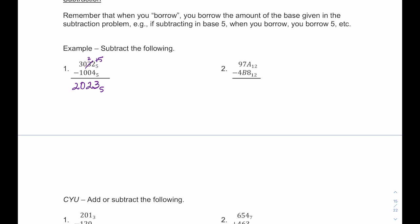For bases larger than 10, we use letters: A equals 10, B equals 11, C equals 12, and so on. In a base 12 subtraction example: A minus 8 is simply 2. But 7 minus B (which is 11) requires borrowing 12 from the next column. So 12 plus 7 gives 19, and 19 minus 11 is 8. That column is now 8, and 8 minus 4 is 4. The answer is 482 base 12.